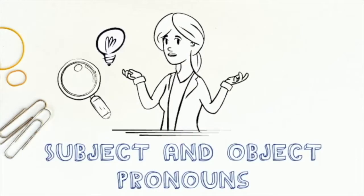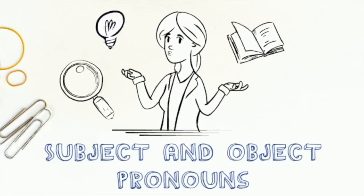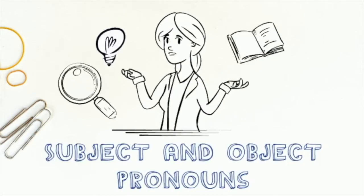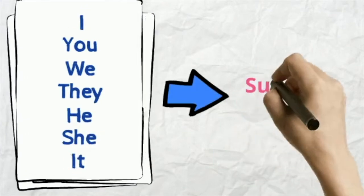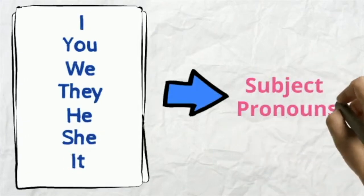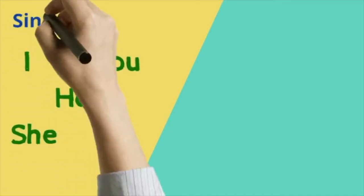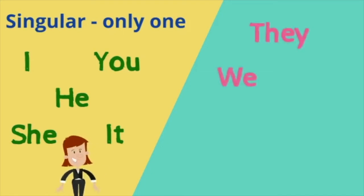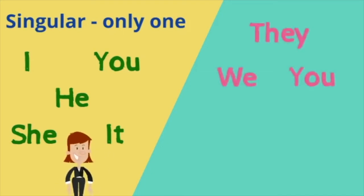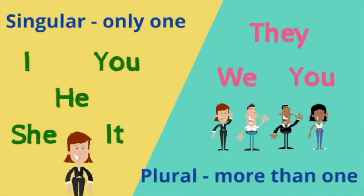Before we talk about reflexive pronouns, let's look at subject and object pronouns. The subject pronouns are: I, you, we, they, he, she, it. We use I, you, he, she, it if the subject is singular or just one. We use they, we, and the plural you if the subject is plural or more than one.